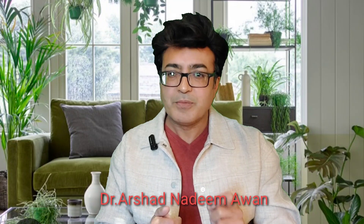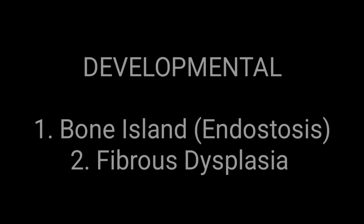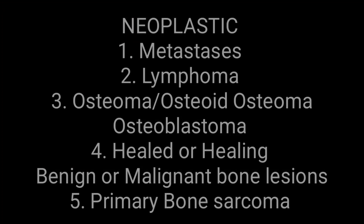A solitary sclerotic bone lesion can be of developmental origin. This includes bone island, also called enostosis, which is easy to recognize on imaging, especially within the medullary area and commonly found in the neck of the femur. The second developmental cause is fibrous dysplasia, another common reason for a solitary sclerotic bone lesion.